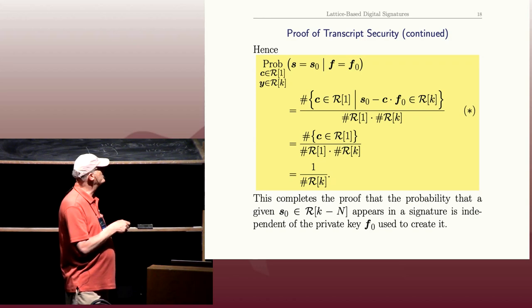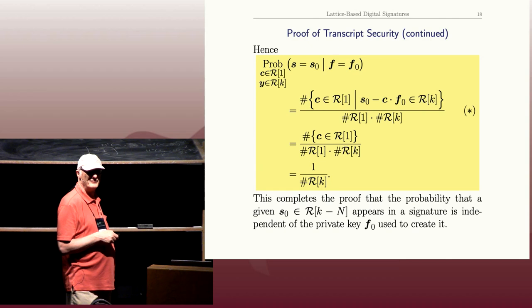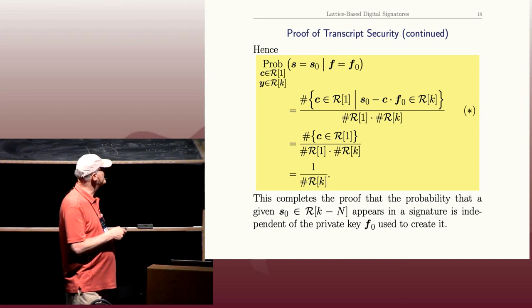But the number of elements in R of 1 cancels, and we just get 1 over the number of elements in R of K, which is 2K plus 1 to some power, 2K plus 1 to the N roughly. In any case, this number doesn't depend on F naught, and it doesn't depend on S naught either.